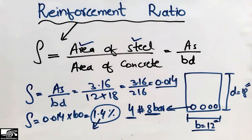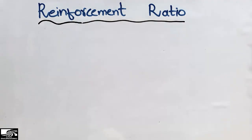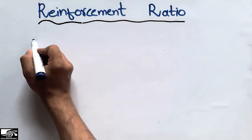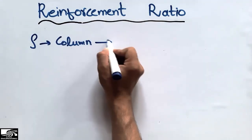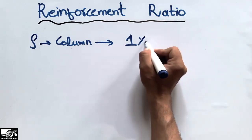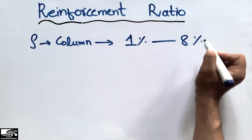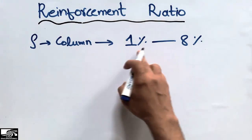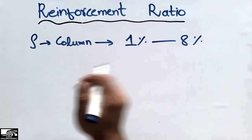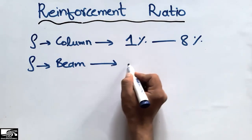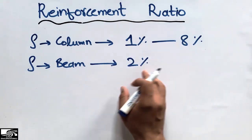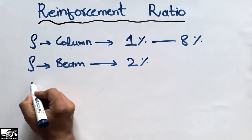Now there are different ranges for different structural members. For beams, there is a range within which we should provide the reinforcement ratio. For columns, the reinforcement ratio generally ranges between 1% minimum and 8% maximum — that is the allowed amount of reinforcement ratio in columns. The reinforcement ratio for the beam is generally around 2%; it may be more or less, but it should be somewhere around 2%.